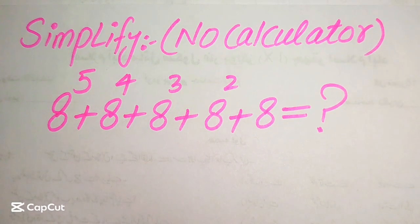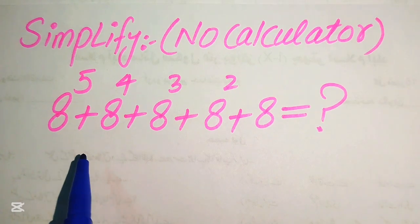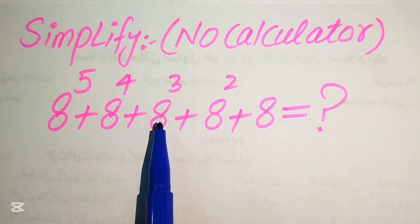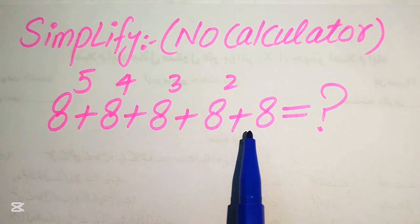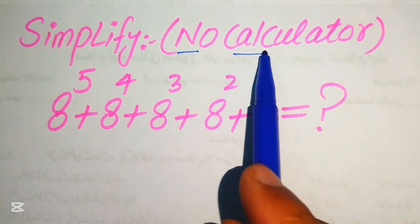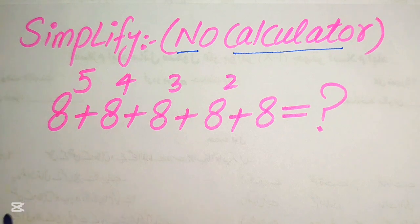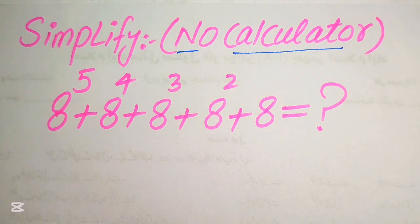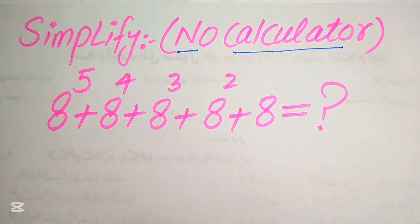Hello everyone. How to simplify this nice algebraic expression. So if we have 8 to the power of 5 plus 8 to the power of 4 plus 8 to the power of 3 plus 8 to the power of 2 plus 8 to the power of 1, we write this algebraic expression into the simplified form. Remember that a calculator is not allowed in this problem — we will show all of the working on paper and do all of the multiplication in our mind.